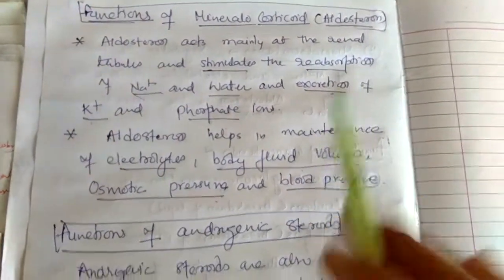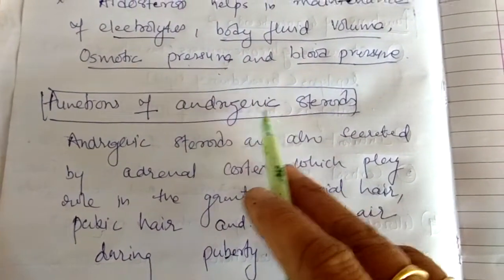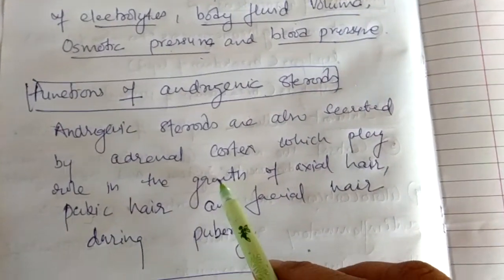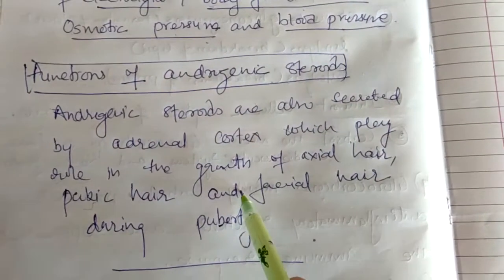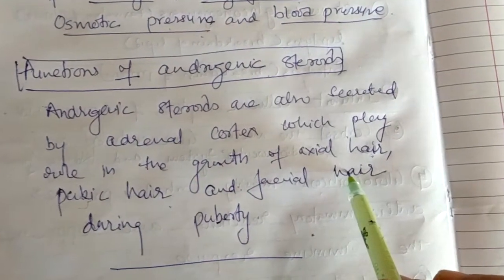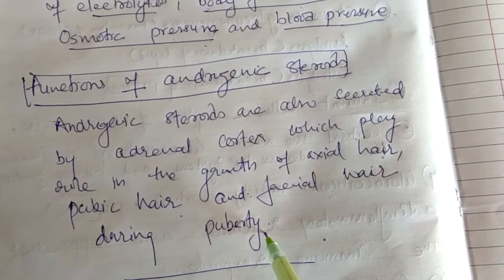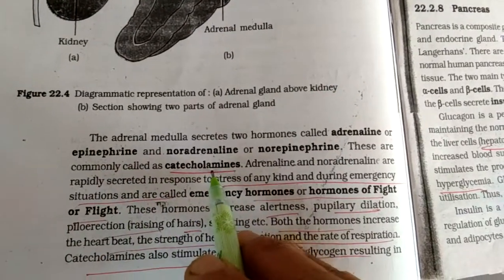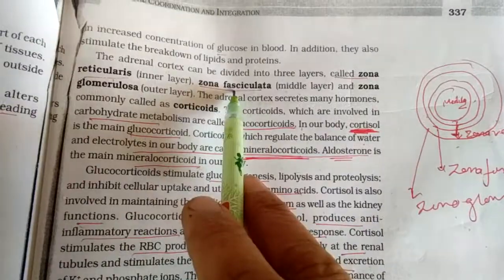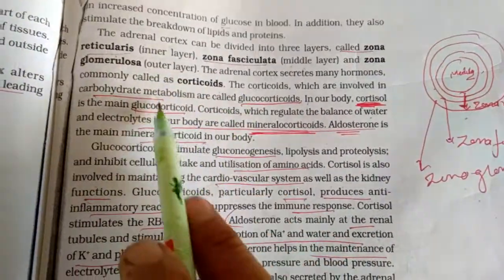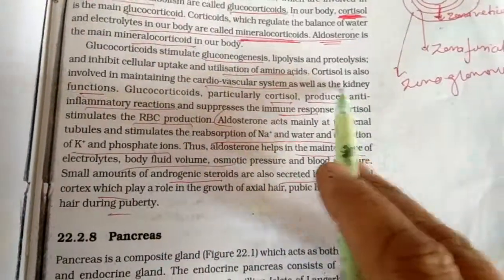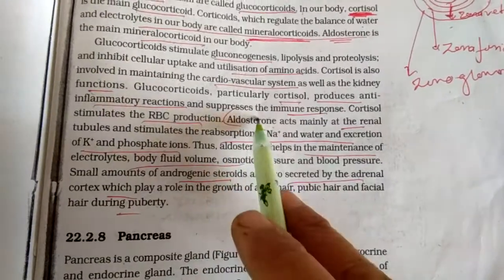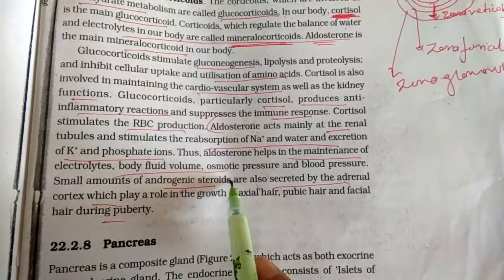The third hormone secreted by the adrenal cortex is androgenic steroids. These androgenic steroids are secreted in small amounts. Their role is in the growth of axial hair, pubic hair, and facial hair during puberty — meaning secondary sexual characteristics arise under the influence of these androgenic steroids. So in summary: hormones of adrenal medulla are adrenalin and noradrenaline called catecholamines — the emergency hormones. Adrenal cortex is divided into zona reticularis, zona fasciculata, and zona glomerulosa, secreting corticoids including glucocorticoids, mineralocorticoids, and androgenic steroids.